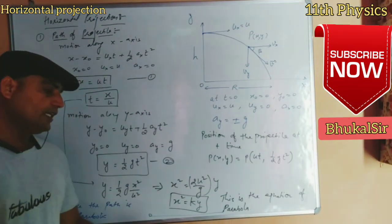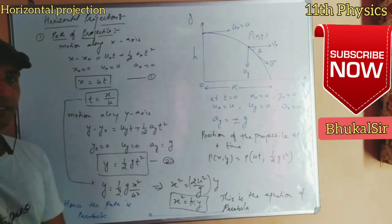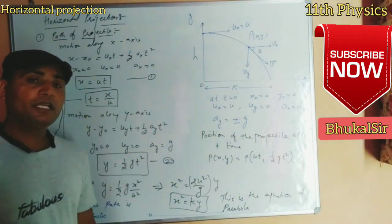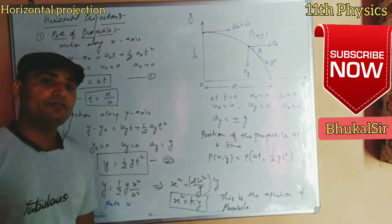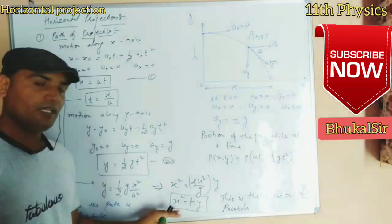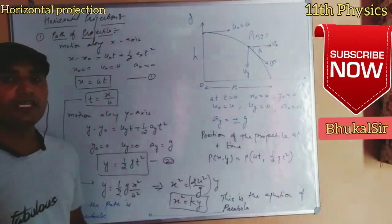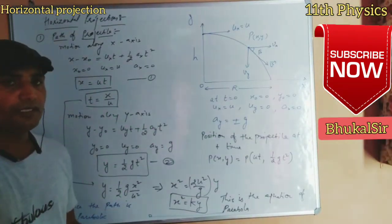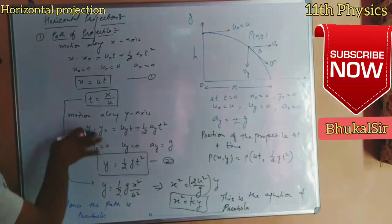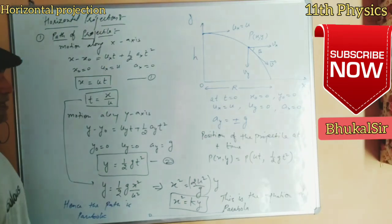I hope this point is clear to you. If not, non-medical students will find this equation in mathematics as well. The path of the projectile is parabolic — this is the parabolic equation. Next, we need to find the time of flight, horizontal range, and velocity.